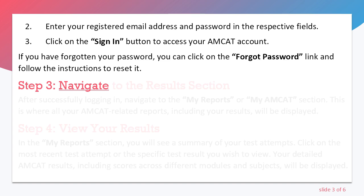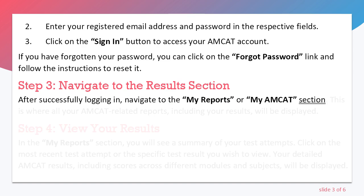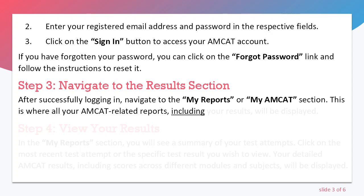Step 3: Navigate to the Results section. After successfully logging in, navigate to the My Reports or My AMCUT section. This is where all your AMCUT-related reports, including your results, will be displayed.